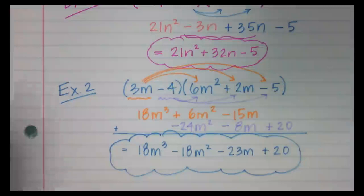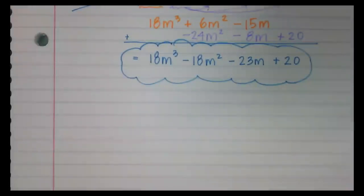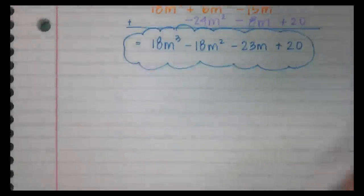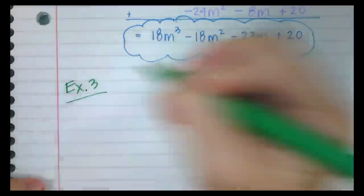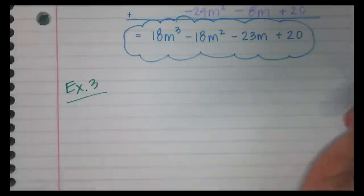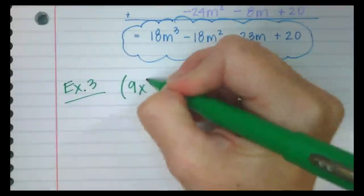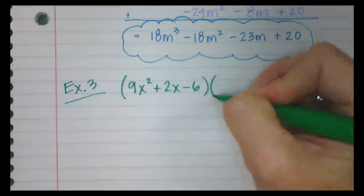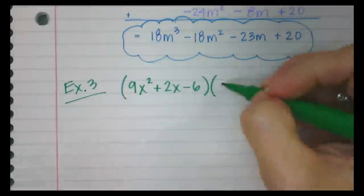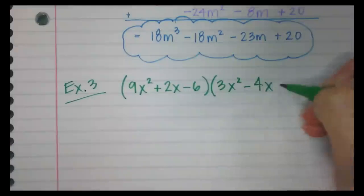Alright, example number three. This one's going to be a doozy — we are going to multiply a trinomial with a trinomial. This is as bad as it gets for what we're doing. The important thing here is to write neatly and keep your work organized. So let's say we have 9x squared plus 2x minus 6, and let's multiply that with 3x squared minus 4x minus 10.